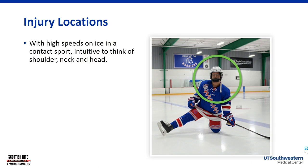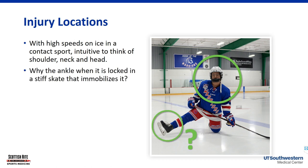For injury locations, it makes sense that we see head, neck, and shoulder involvement. But why are there ankle issues in youth hockey? The ankle is locked up and really well protected in a skate — but that is part of the issue. It's like keeping the ankle in a cast all the time. These kids play a lot of hockey with their ankles locked up, so their ankles get stiff and weak — similar to what happens when a child comes out of a cast and can't move that joint very well.